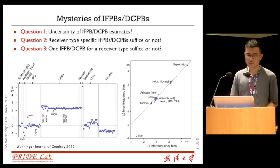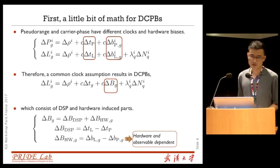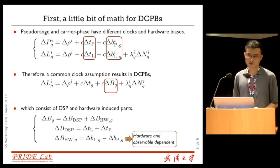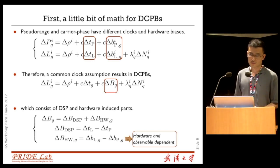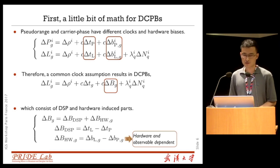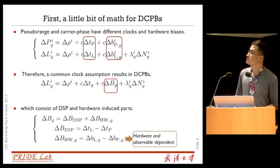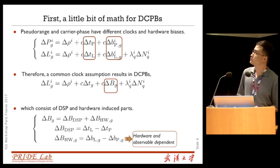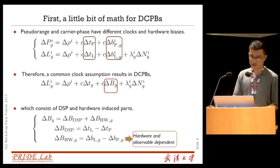To answer these questions, we have a few formulas. The first equation is the between-station single difference for GLONASS satellite I on frequency band G. We should note that the pseudorange and the carrier phase have different clocks and hardware bias. So in data processing, if a common clock assumption is made, it results in DCPB — differential code phase bias — which consists of DSP-induced and hardware-induced parts. The hardware-induced part is in fact hardware and observable dependent, and the DSP part is time-invariable.